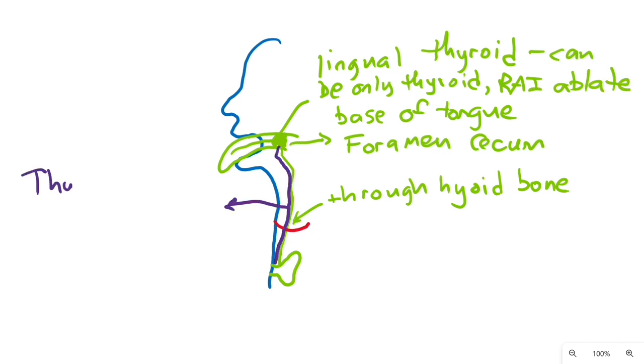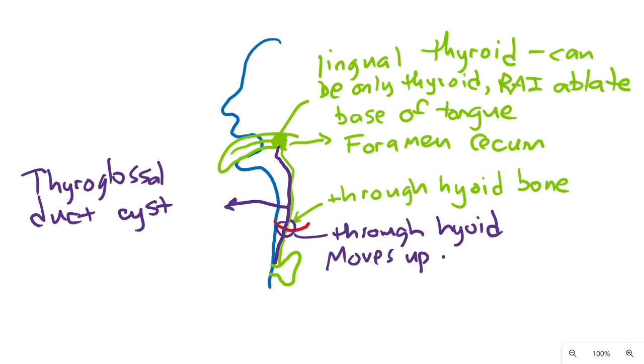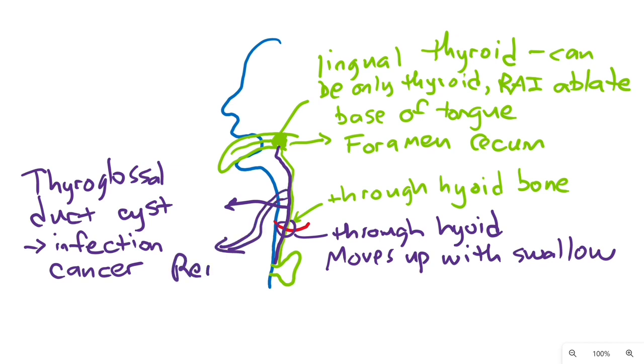A thyroglossal duct cyst is a tract that is left over from the descent of the thyroid and runs from down the middle of the hyoid bone to the thyroid. It moves upwards with swallowing. It is recommended that thyroglossal duct cysts are removed surgically due to the risk of infection and more importantly risk of thyroid cancer forming in them. The surgery to remove them is called the Sistrunk procedure and involves removal of the thyroid thyroglossal duct from the top of the thyroid up in the neck and includes the center of the hyoid bone.